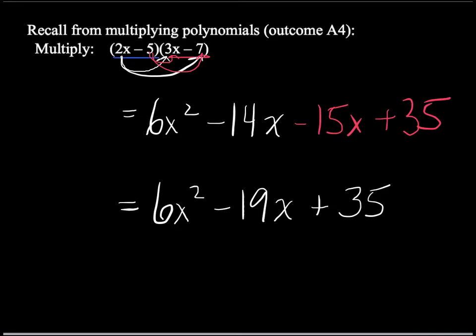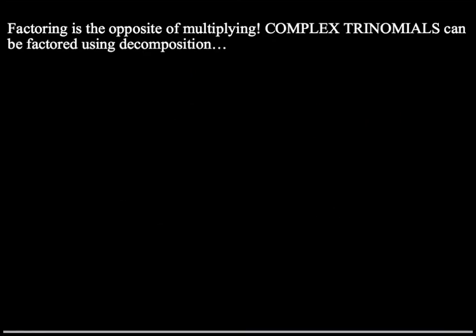Okay, so we're going to do the opposite of that. Now let's do the opposite of multiplying. That is factoring. So factoring is the opposite, and we're going to look at complex trinomials. So let's just jump in with the first example.